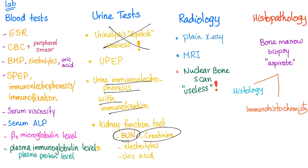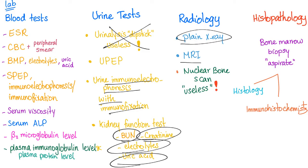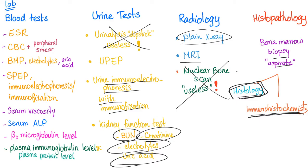For radiology, we need plain X-ray and MRI. Nuclear bone scan is useless in multiple myeloma. For histopathology, we need a bone marrow biopsy — also known as bone marrow aspirate — with histopathology and immunohistochemistry. We look under the microscope and stain with immunological markers.